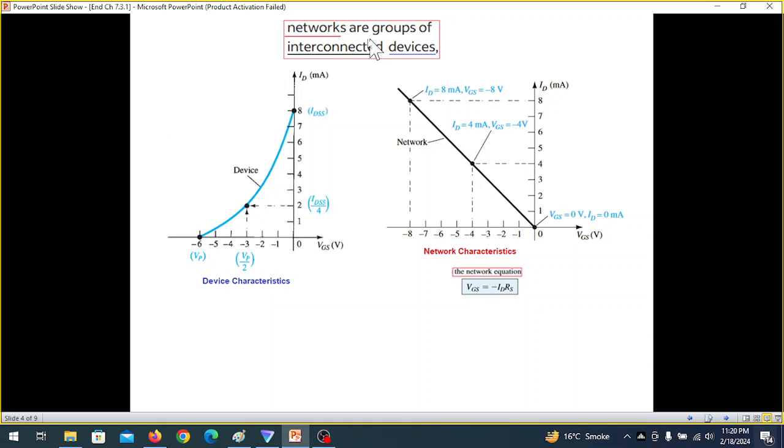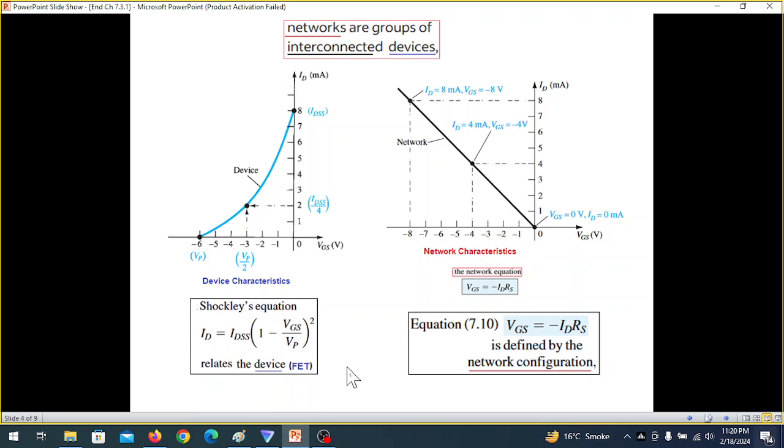But keeping this in mind actually we will have two graphs. One is called the network graph which we can draw from this relation that we just derived. This is the network graph. And the other is the device characteristics which we plot from the Shockley's equation. And this is the device characteristics graph. And ultimately, okay, this one is from here, network configuration.